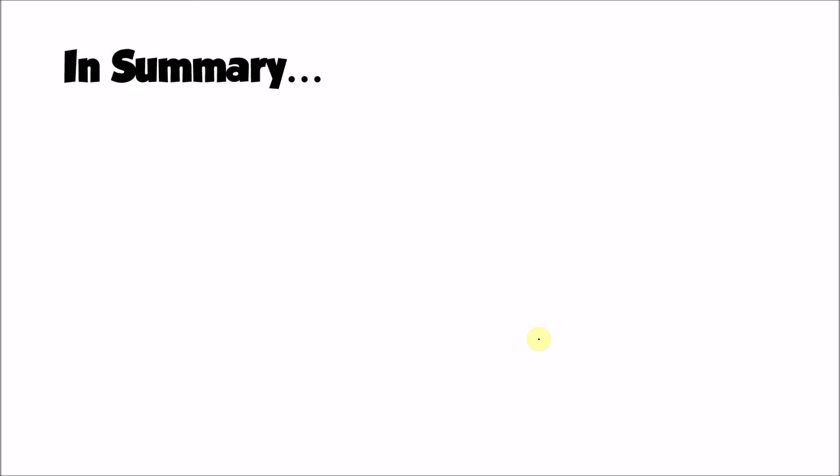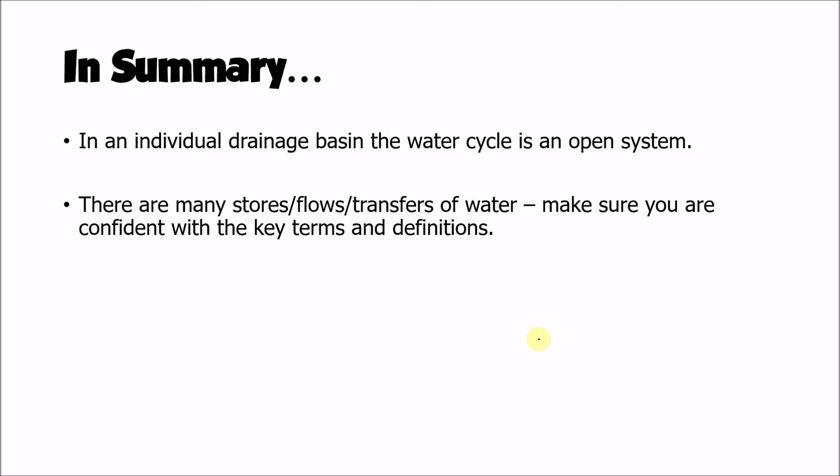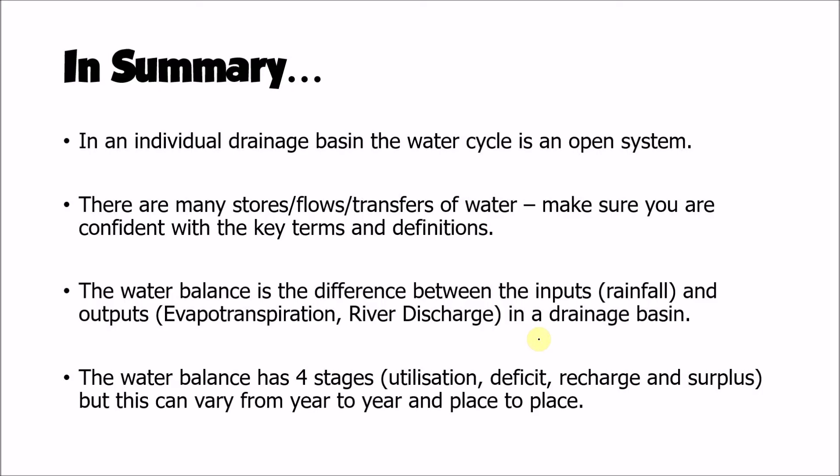In summary: within an individual drainage basin, the water cycle is an open system with inputs, flows, stores, transfers, and outputs of water. There are many key bits of terminology associated with the drainage basin hydrological cycle, and it's important to confidently use and define those terms and describe those processes. The water balance describes the relationship between inputs and outputs within a drainage basin, has four stages, and can vary from year to year and from place to place.